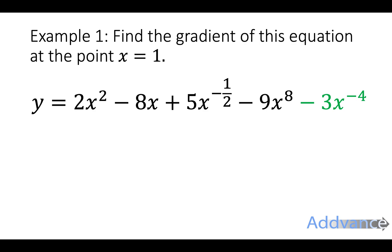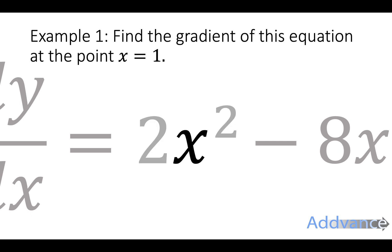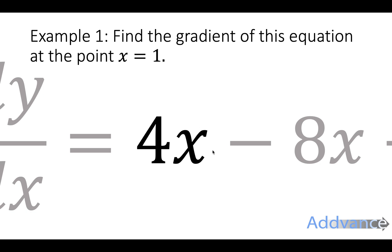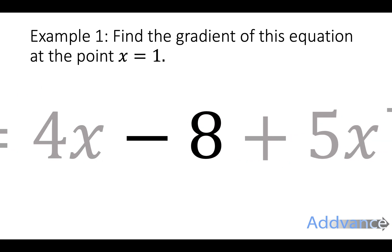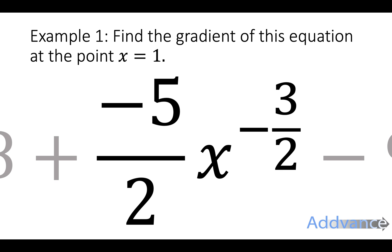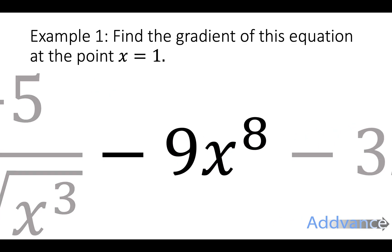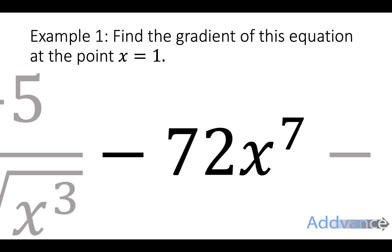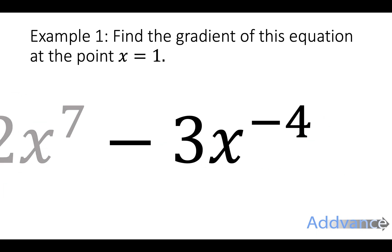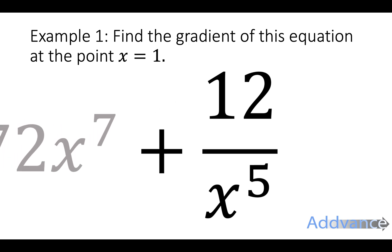Watch carefully as we differentiate this step by step. Y differentiates to dy over dx. 2x to the power 2 becomes 4x to the power 1, which is just 4x. Minus 8x differentiates to minus 8. 5x to the power minus a half differentiates to 5 times minus a half times x to the power minus 1, which simplifies further and can be written as a root. Minus 9x to the power 8 differentiates to 72x to the power 7. Minus 3x to the power minus 4 — multiply down by minus 4, minus 3 times minus 4 is plus 12, and you take 1 off the power — gives 12x to the power minus 5, which is the same as 12 over x to the power 5.